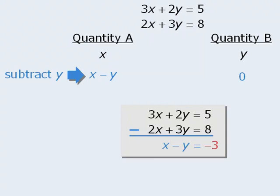So we can now go to quantity A and replace x minus y with negative 3. When we compare negative 3 with zero, we see that zero is greater, which means the correct answer here is B.